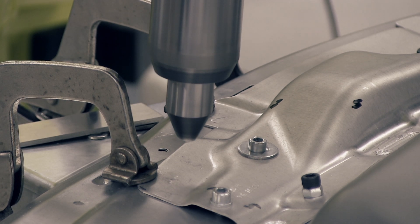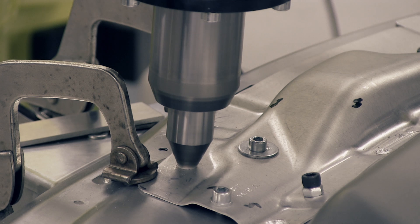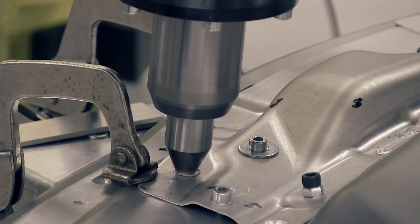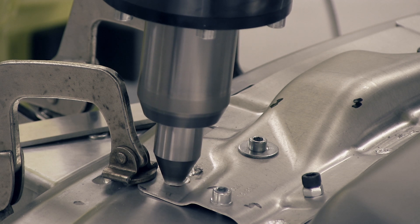Friction stir welding is a revolutionary process that avoids all these drawbacks. It is a clean, green and safe process that joins metals by frictional heat generated by a rotating tool.